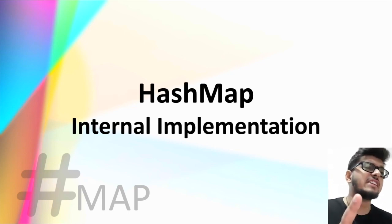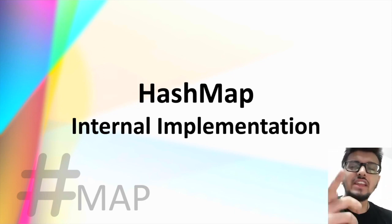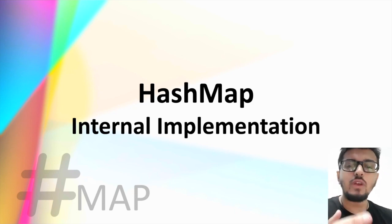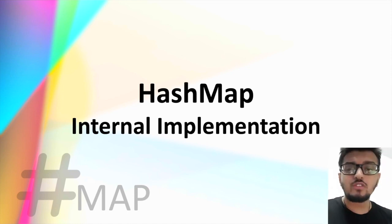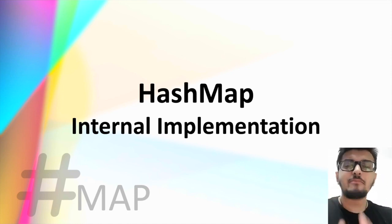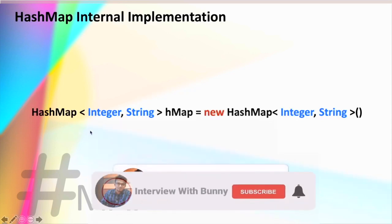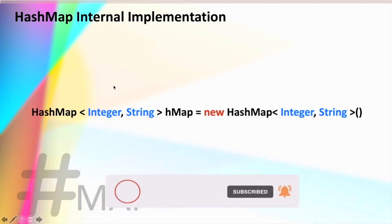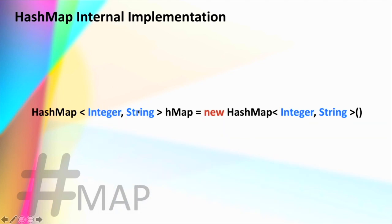Let's start this video on understanding the internal implementation of HashMap. This is the general syntax of declaring a HashMap in Java. A HashMap is a data structure for storing a key-value pair, and depending on the data type of your key and value pair you will initialize your HashMap accordingly. While declaring a HashMap, nowhere are we disclosing the size of the HashMap, which means the size is declared by the JVM internally during runtime.